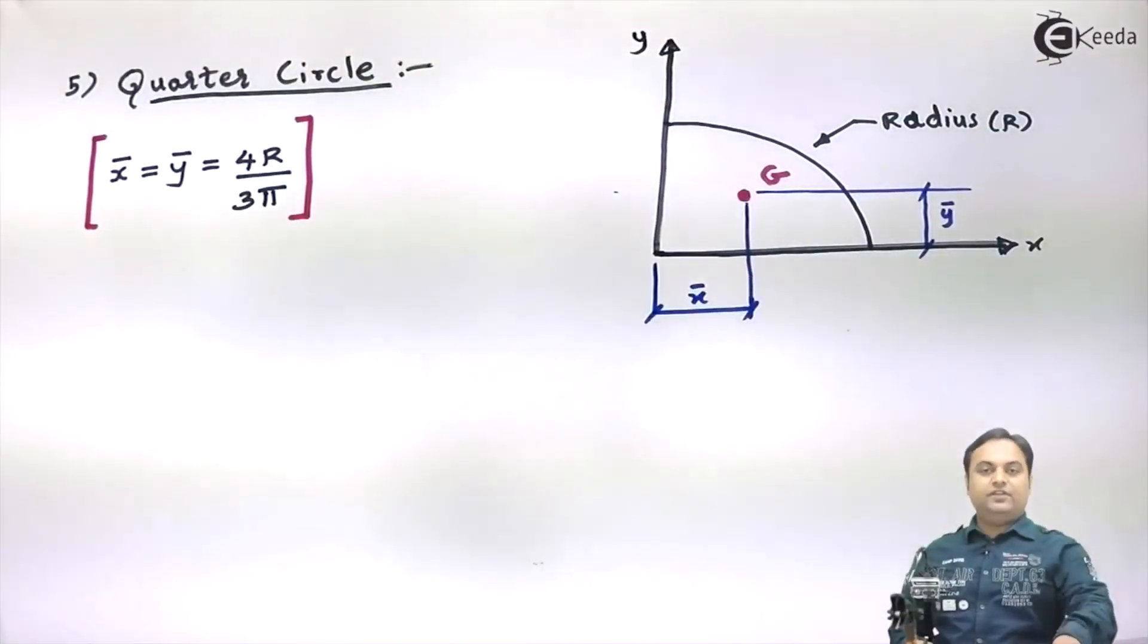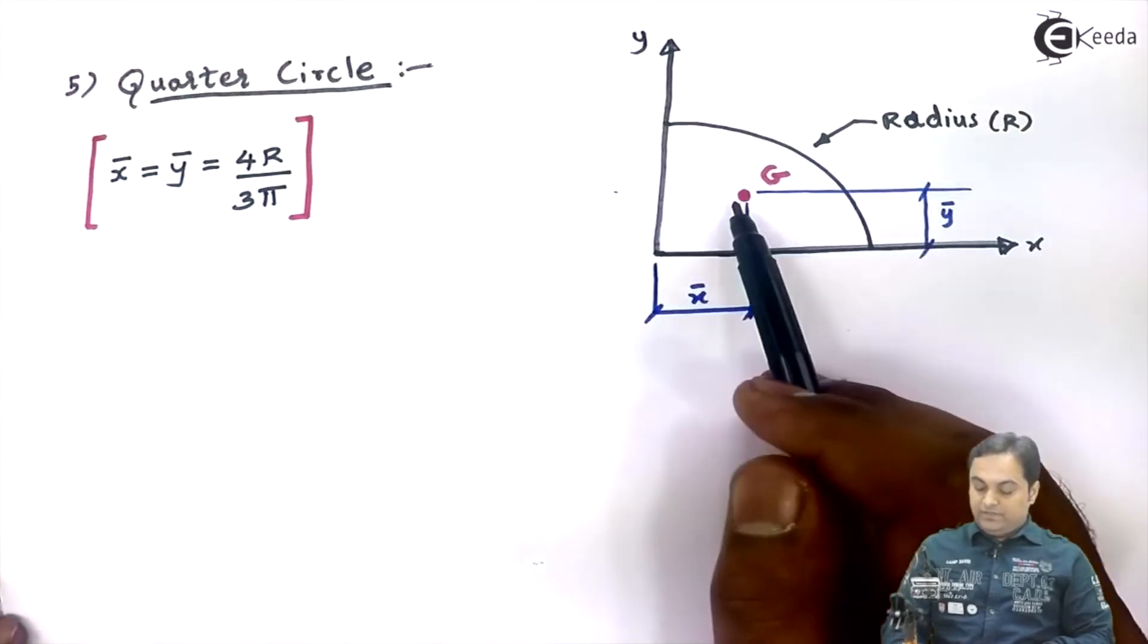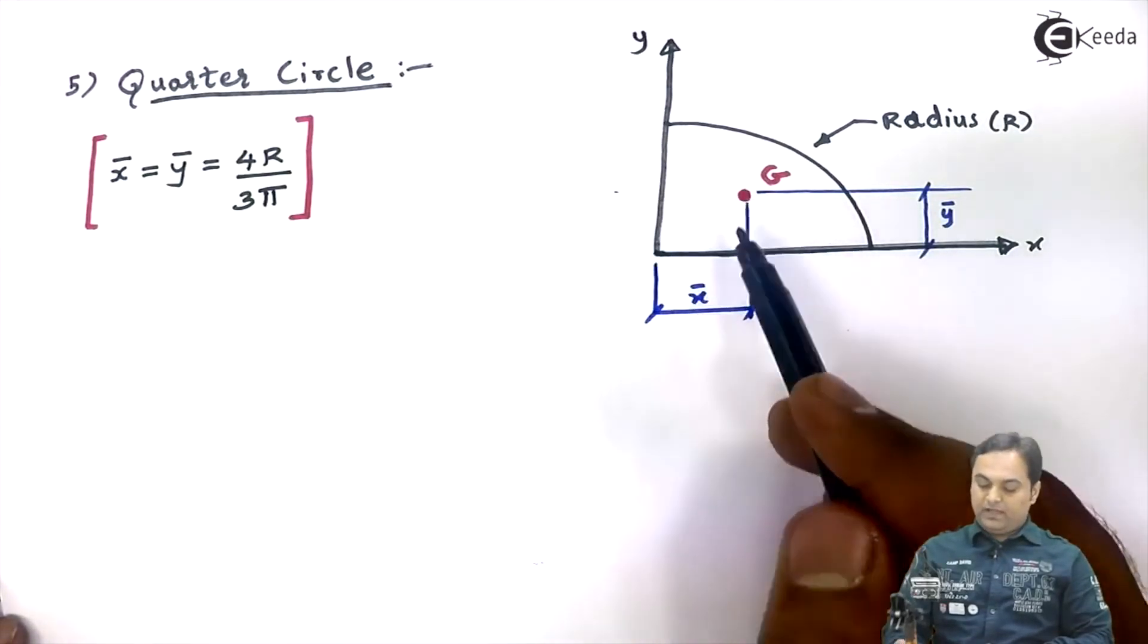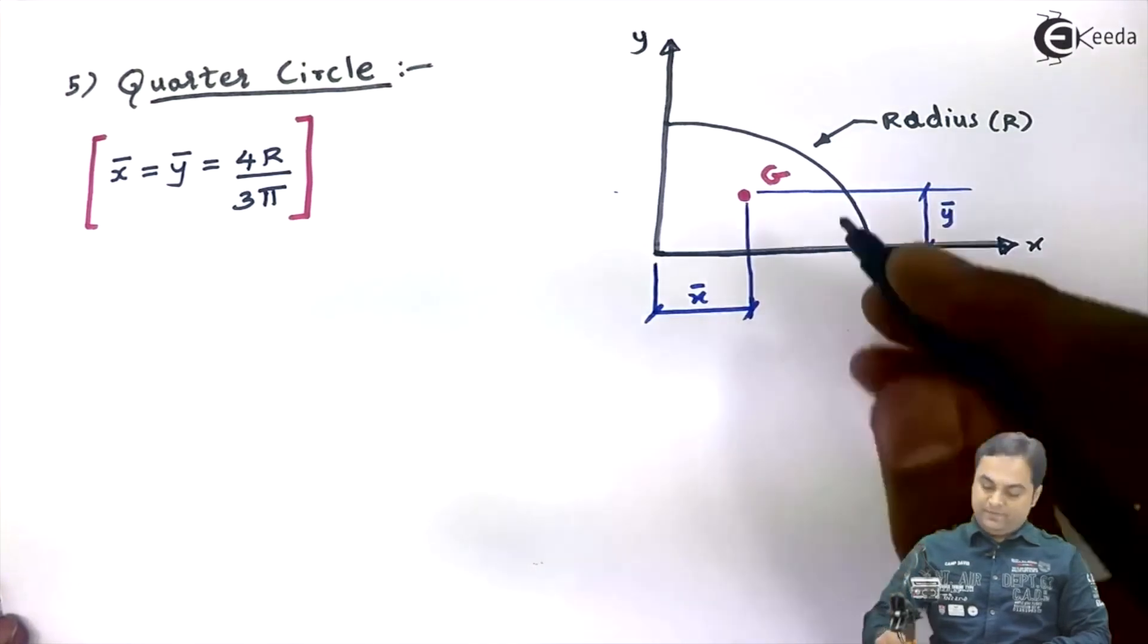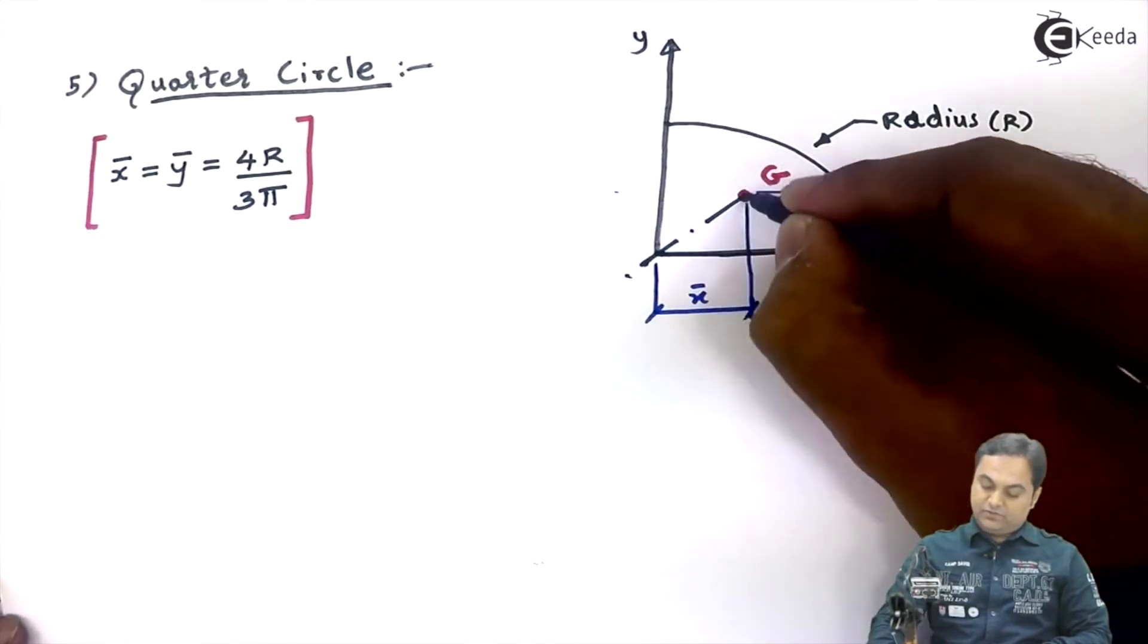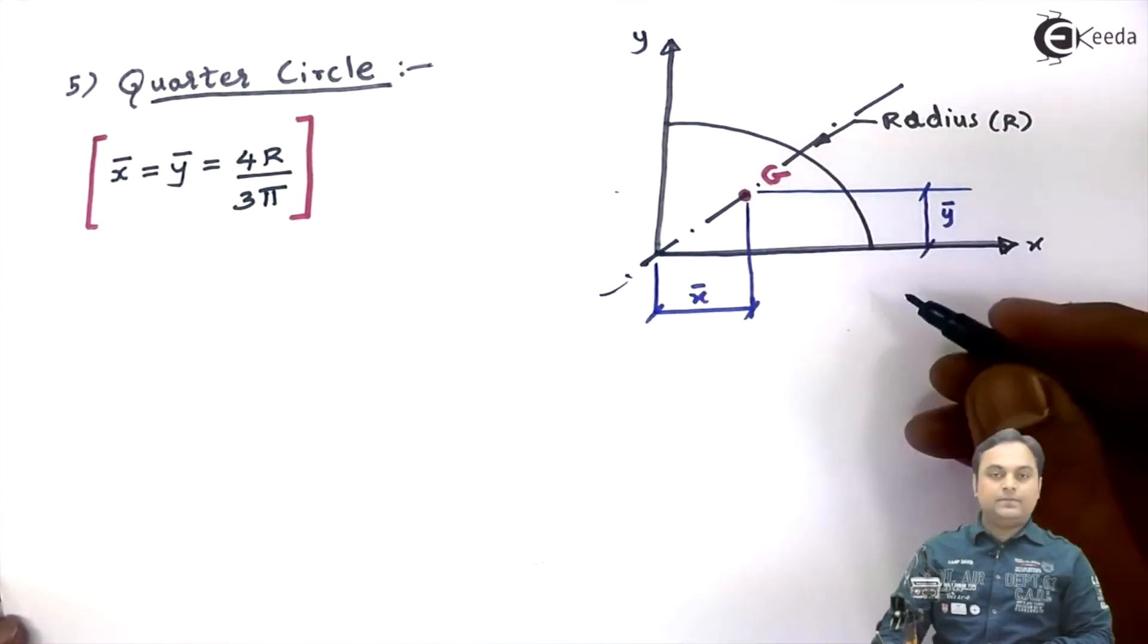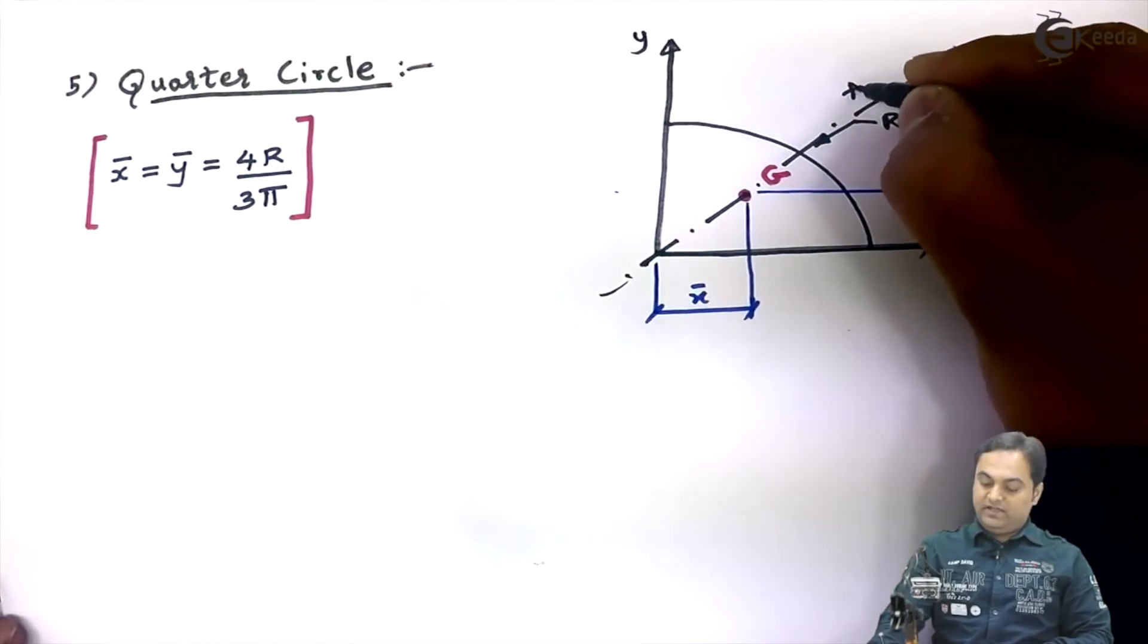In the last, we have quarter circle. In quarter circle, the centroid is located by x̄ and ȳ. And this quarter circle is symmetric about an axis which is called as axis of symmetry.